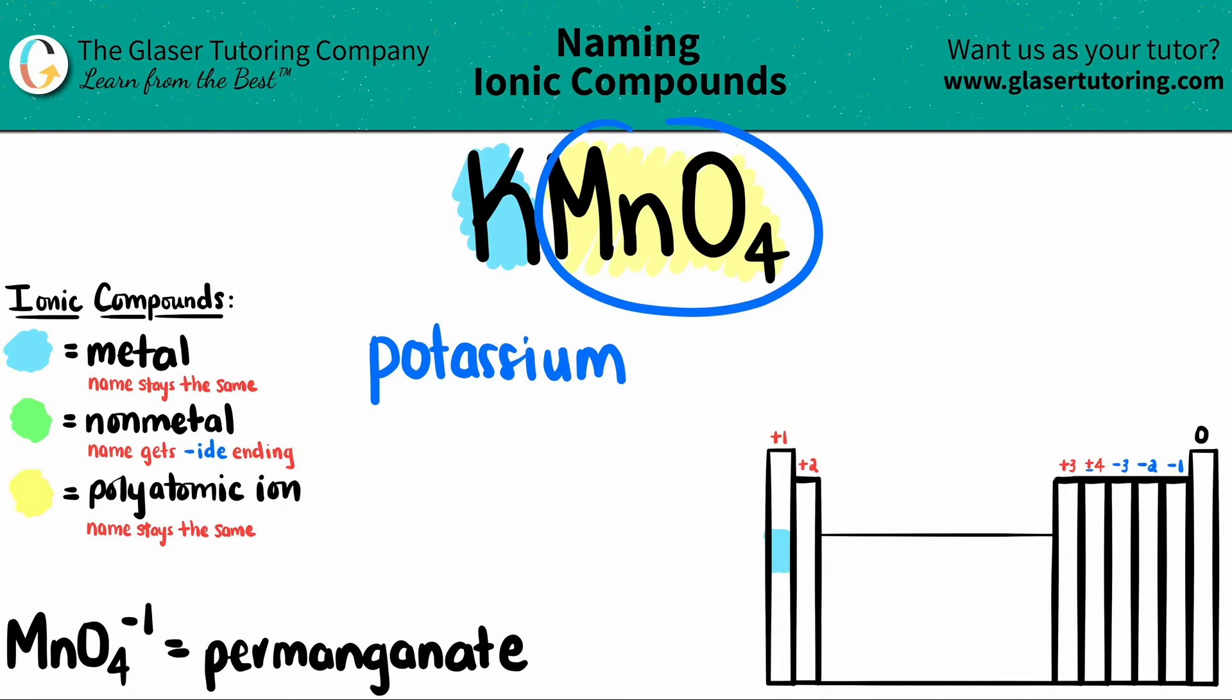Now, since we're dealing with a polyatomic ion, that name always stays the same. So since it was permanganate by itself, it's going to be permanganate in the compound.